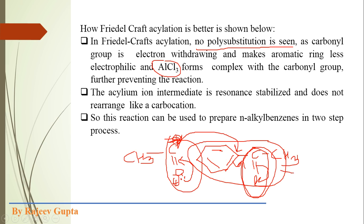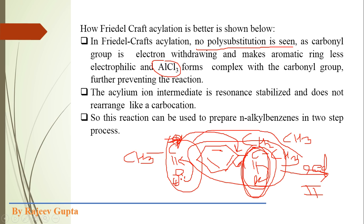In the first step we prepare acetophenone via Friedel-Crafts acylation. In the second step we reduce the carbonyl group using Clemmensen reduction or Wolff-Kishner reduction, converting the carbonyl group to a methylene (CH2) group. Finally, we get Ph-CH2-CH3, that is ethylbenzene. So ethylbenzene is obtained in pure form — no product mixture. Pure 100% ethylbenzene is found. There is no polyalkylation. This is why Friedel-Crafts acylation is preferred to prepare ethylbenzene from benzene.